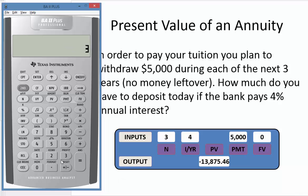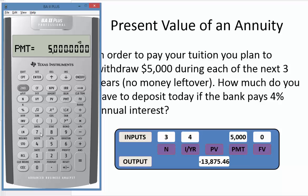We use the calculator to solve for the present value. We enter N equals three, the interest rate as four percent, five thousand as the payment amount, and zero for future value since nothing is left over. We compute the present value and get thirteen thousand eight hundred seventy-five dollars and twenty-five cents. By depositing that amount today at four percent for three years, we will be able to withdraw five thousand for each of the next three years and deplete those funds.